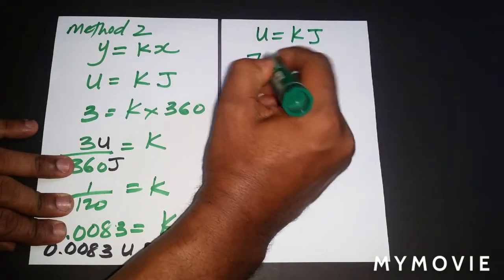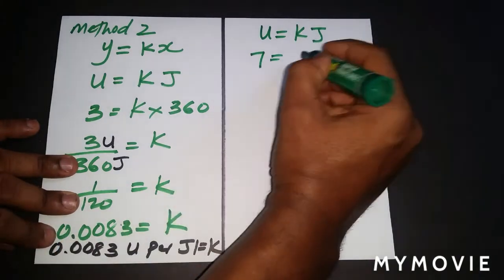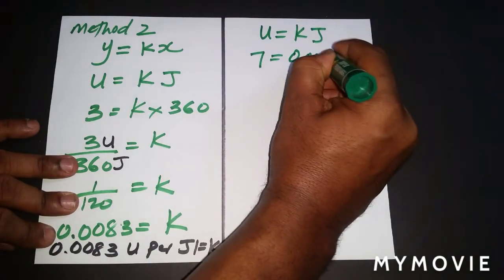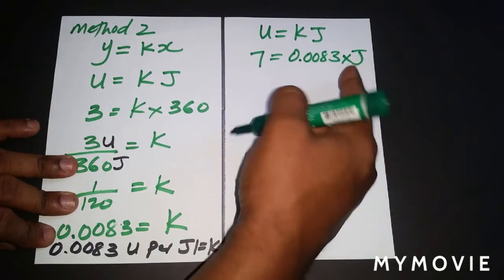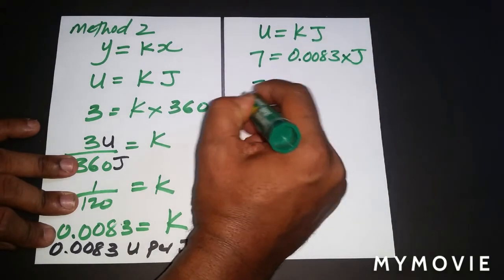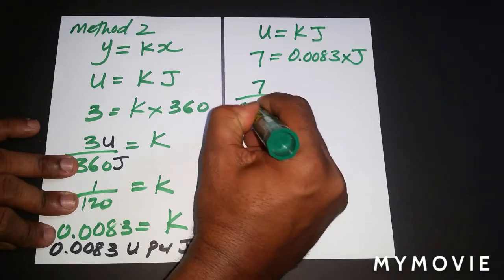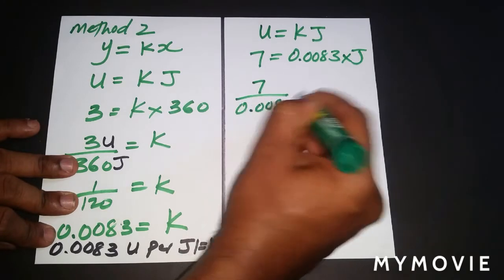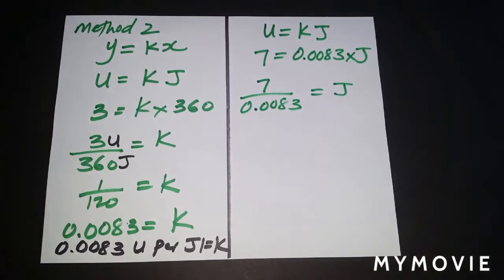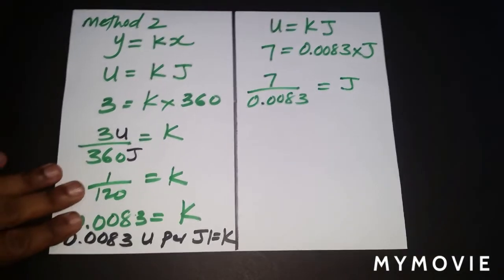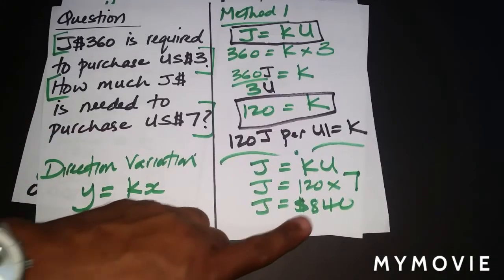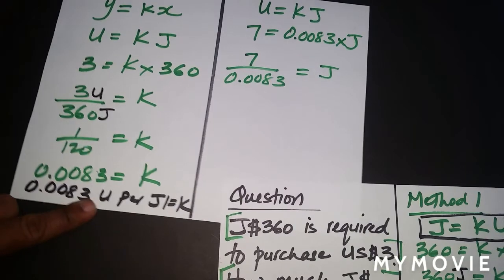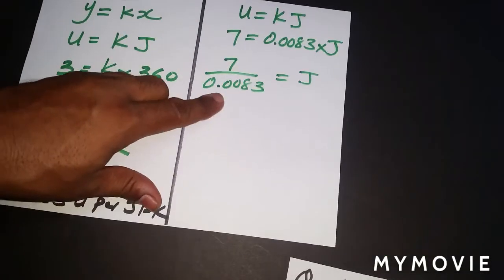So now it is 7, K is 0.0083 times the Jamaican amount, which is what we need to find. We're transposing for J, so 7 divided by 0.0083 is going to give us the Jamaican amount. The only thing that might happen in terms of it being slightly different from this value is that the decimal point we rounded off by.